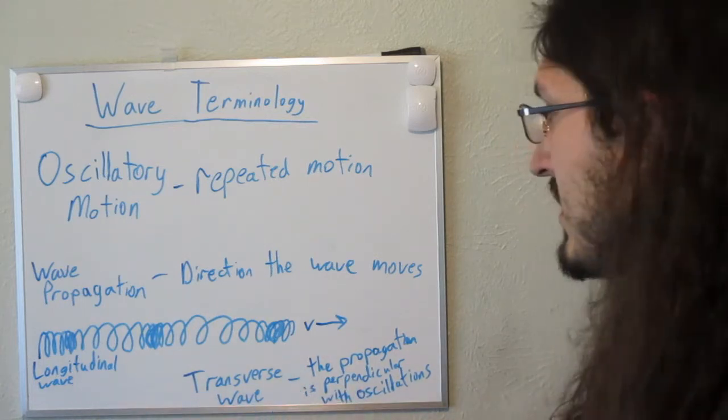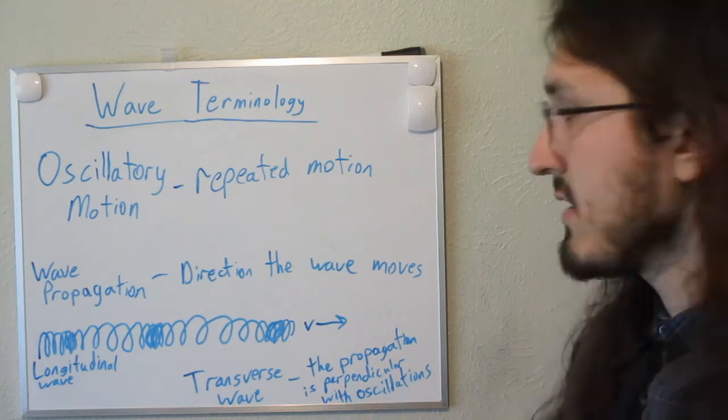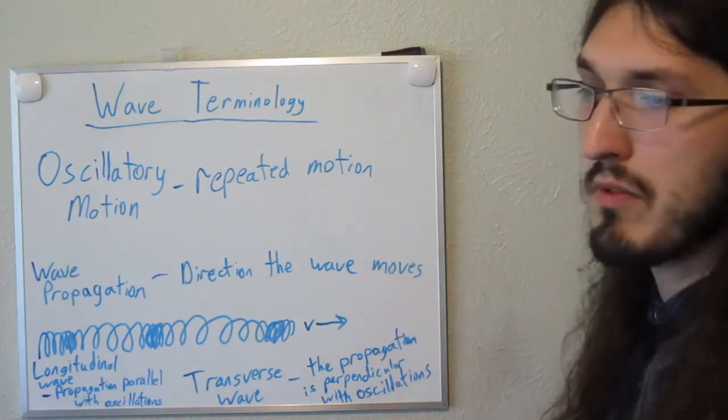So to define the longitudinal wave, it would just be the opposite of the transverse. The propagation would be parallel with the oscillations. I'm going to go ahead and erase some of this board to have some room for some other terminology.